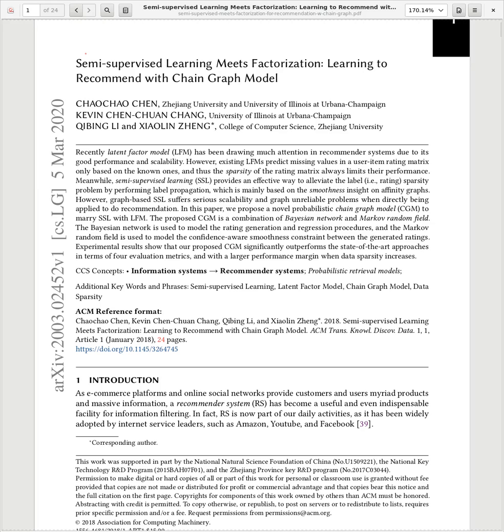So the abstract is following. Recently, latent factor models have been drawing much attention in recommender systems due to its good performance and scalability. However, existing elements predict missing values in the user item matrix only based on the known ones. And thus, sparsity of the rating matrix always limits their performance. Meanwhile, semi-supervised learning provides an effective way to alleviate the label, this is rating sparsity problem by performing label propagation, which is mainly based on the smoothness inside on affinity graphs. However, graph-based SSLs suffer serious scalability and graph unreliable problems when directly being applied to do the recommendation.